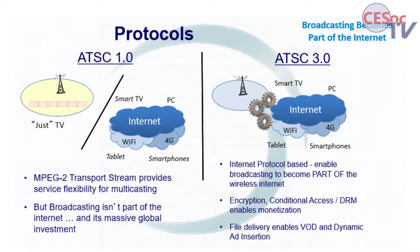Looking back at ATSC 1.0, there was TV and a little bit of other stuff, but the internet wasn't an entertainment platform yet — TV was really a silo. MPEG-2 transport stream was great for that, lots of flexibility as a standalone. But as the internet came along and entertainment happened across the internet, MPEG-2 became a problem because it's very difficult to integrate things delivered over MPEG-2 transport with things delivered over broadband using IP. It can be done, but what you have to do is extremely tortuous.